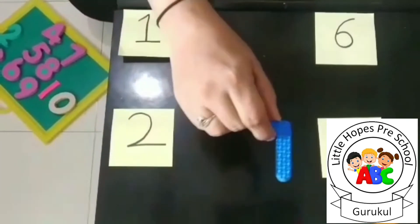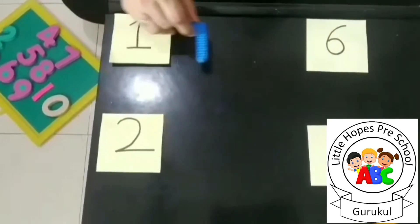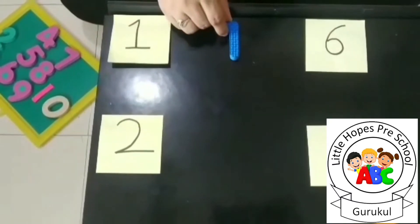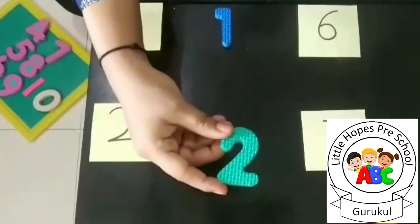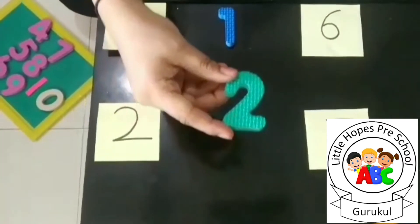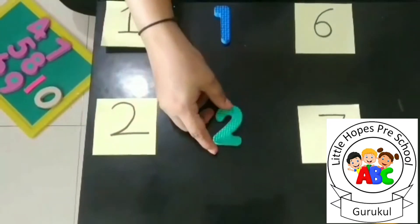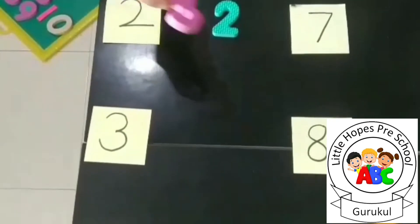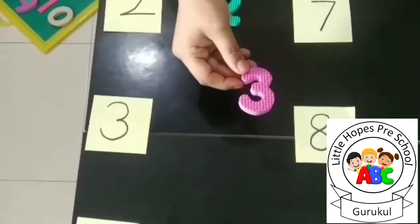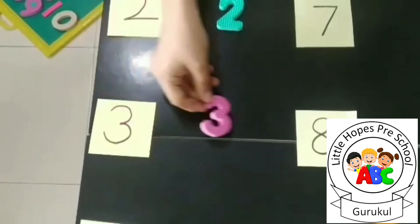This is number 1. So where is number 1? Over here. Next number is number 2. So where is number 2? It is over here. Next number is number 3. So where is number 3? It is over here.